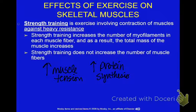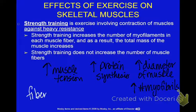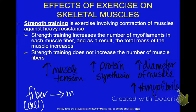An increase in protein synthesis within the muscle is going to increase the diameter of the muscle cell, because you've increased the number of myofibrils. Within a whole muscle you have bundles of muscle fibers. Within a muscle fiber — that's a muscle cell — you have the myofibrils.